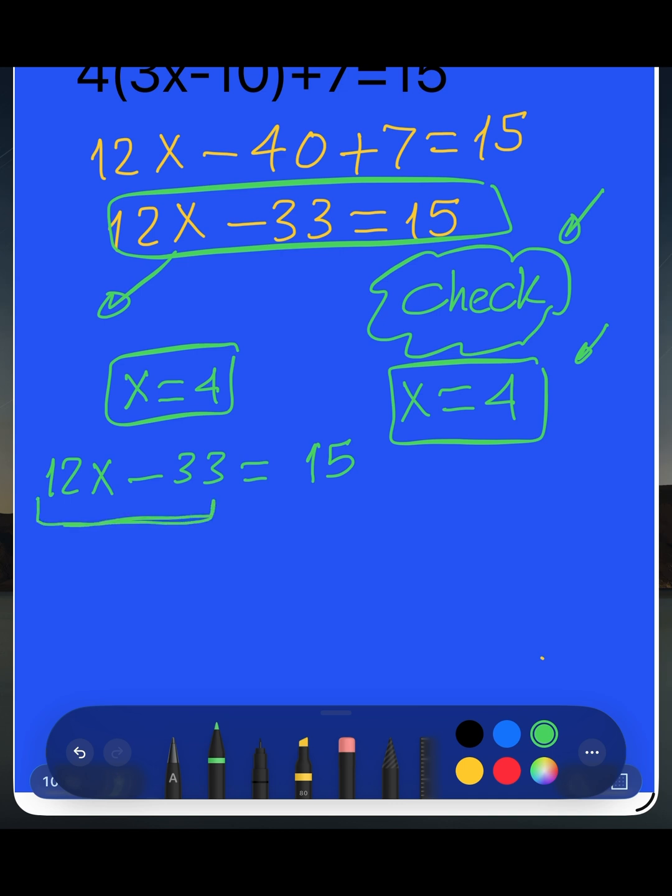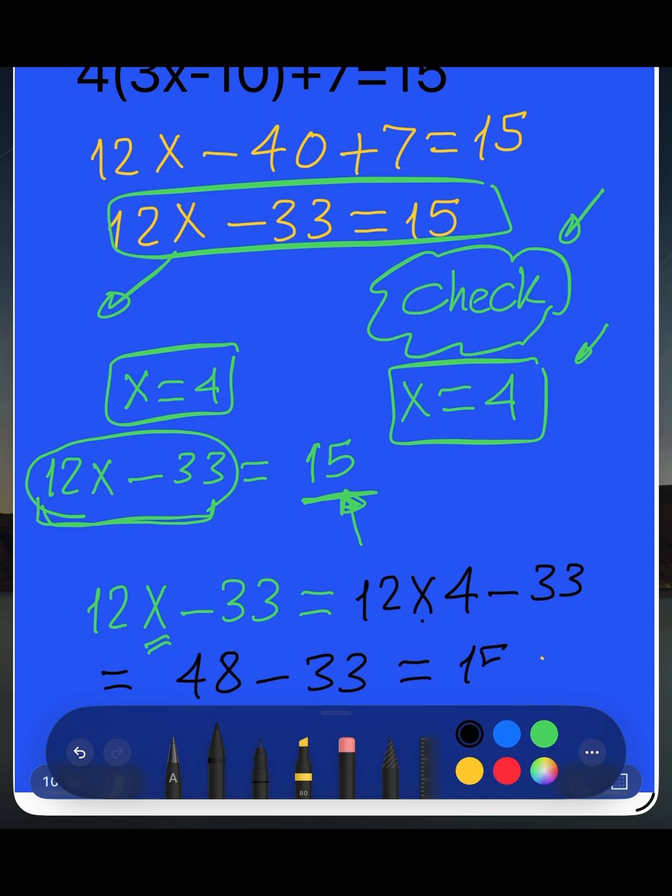I check if we have left side is the same as right side. Right side here, we have 15. What about the left side? We will take the left side. We have 12x minus 33. I replace the x by 4. Then we have 12 multiplied by 4 minus 33. 12 multiplied by 4 is 48 minus 33 equals 15. It's the same as right side.